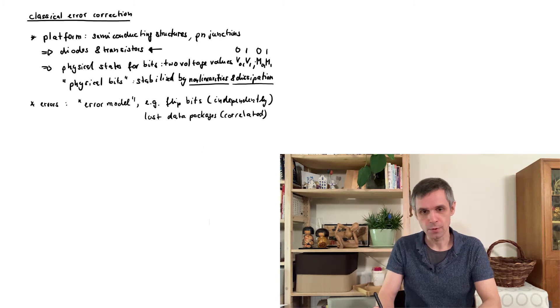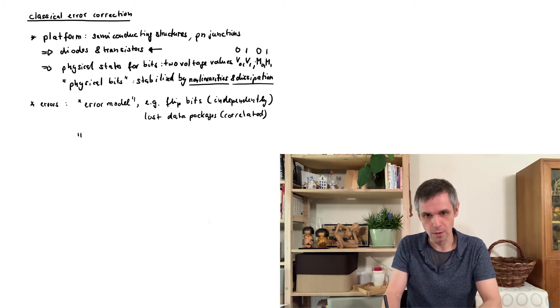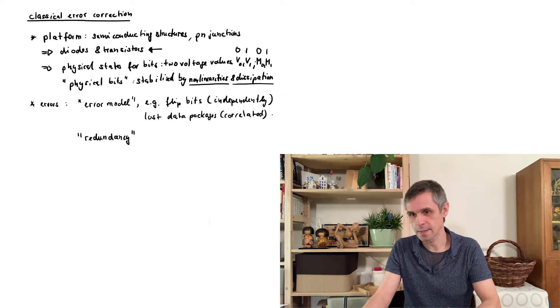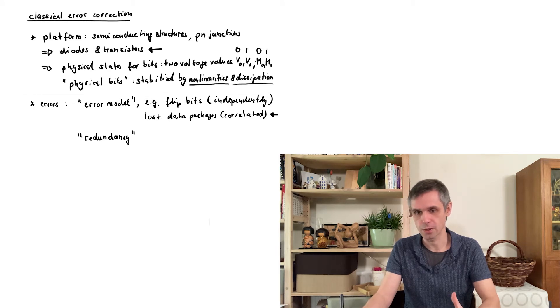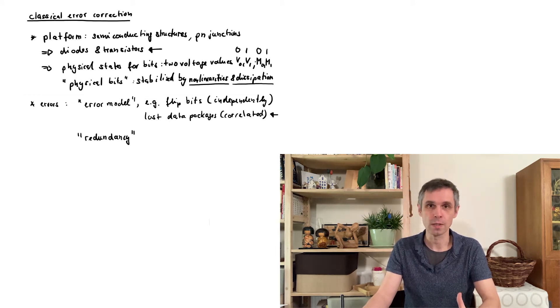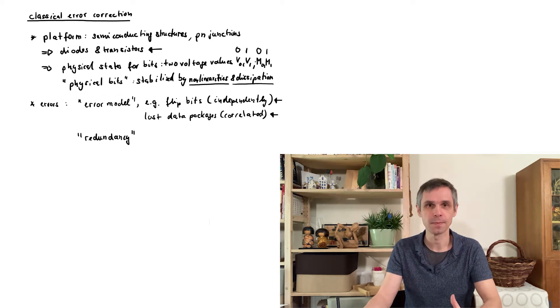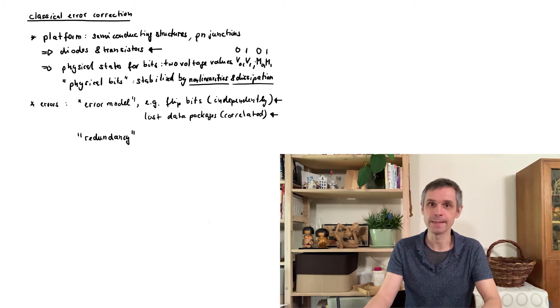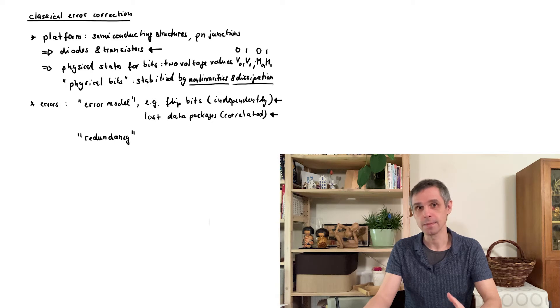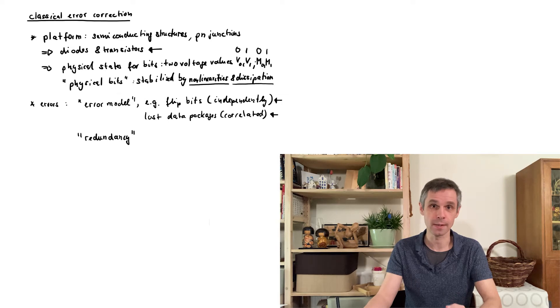To mitigate against these errors, we need some additional information somewhere stored in our system, and this is known as redundancy. So this could be for instance some information about the number of data packages that have been sent, or some expectations about when they should be arriving. But for illustration I'm going to focus on this case here, so the case where some of the bits have a wrong value. And in order to recover from this, we need to have this information stored somewhere else in the system. So essentially we need some additional physical components storing bits that help us to identify these errors and then recover from them.